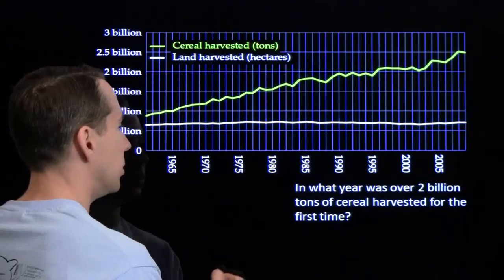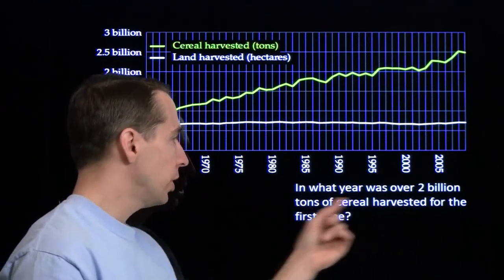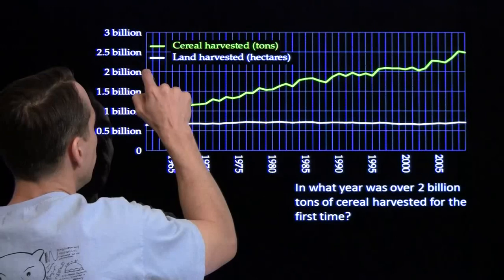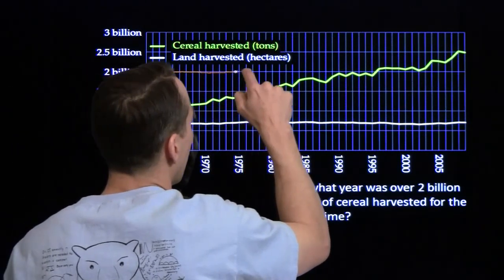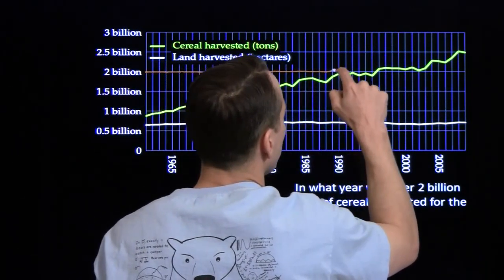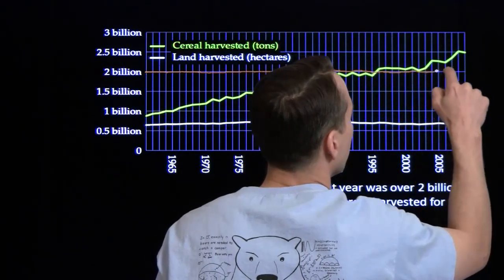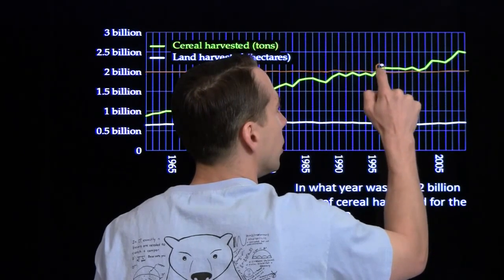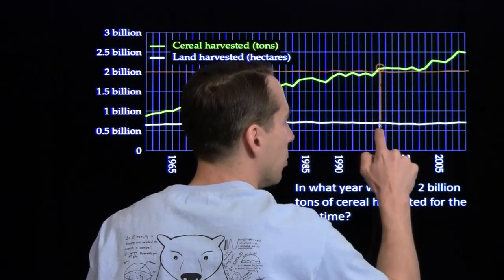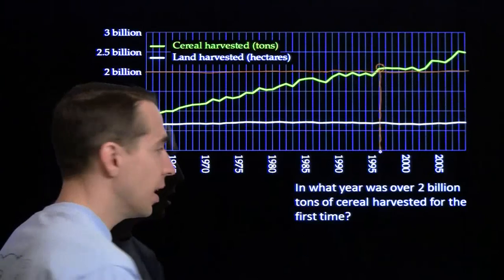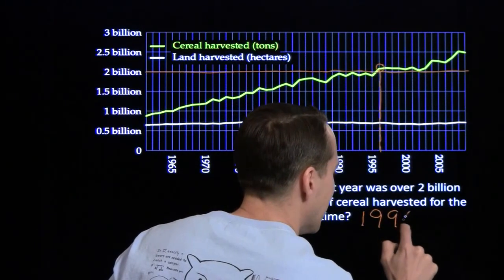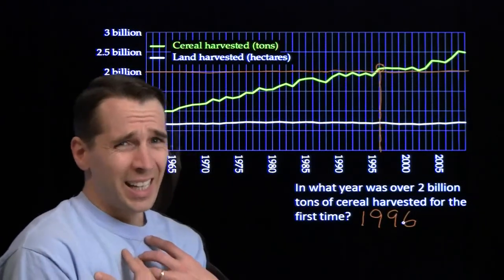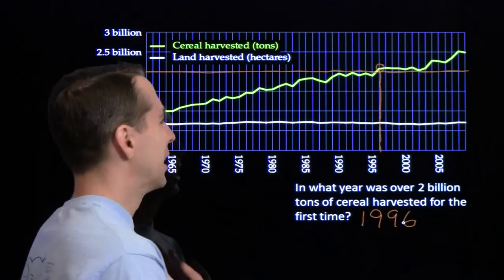Next question: in what year did we first clear 2 billion tons of cereal harvested? We look at the 2 billion tons line and find the first time the cereal harvested line goes above it. We go down to the year scale and see that it's 1 year after 1995, which is 1996. That's after I graduated from college and probably before you were born.